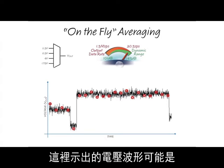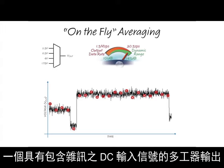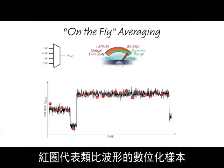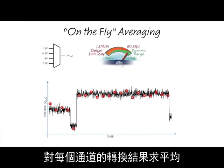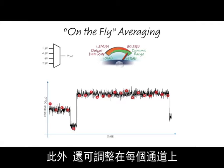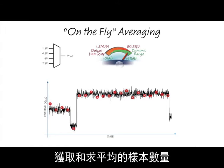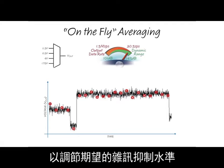The voltage waveform shown here could be the output of a multiplexer with multiple input signals that contain noise. The red circles represent the digitized samples of the analog waveform. The integrated digital filter can be used to average the conversion results from each channel. In addition, the number of samples taken and averaged on each channel can be tuned to adjust the desired level of noise suppression.